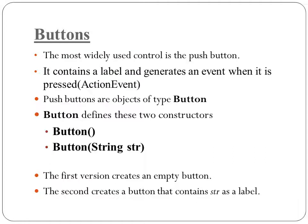The next control is Button. The most widely used control, a push button has a label associated with it, and most importantly, it generates an event when it is clicked or pressed. That event is called ActionEvent. It has two constructors: Button() creates an empty button without any label, and Button(str) creates a button that contains str as its label.